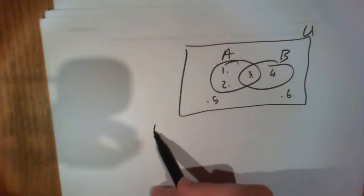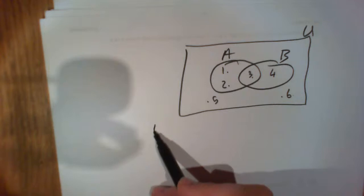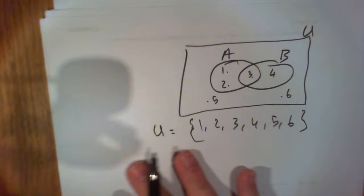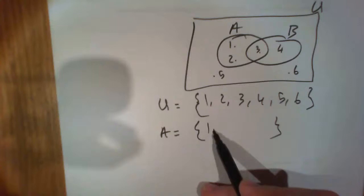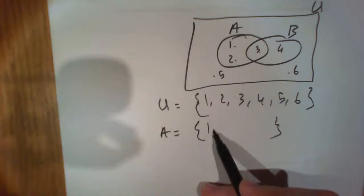So first of all, let's define the universal set. In this case our universal set is one, two, three, four, five, and six. It's everything. So far so good. Now let's define set A. So set A is everything inside of set A, so that's one, two, and three. Let's define set B.